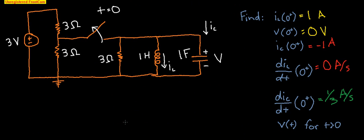And that's all of our initial conditions. The reason you need initial conditions is that when you go to solve the circuit for V(t), you'll find that you can't figure out what certain constants are. You need these initial conditions to plug numbers back in so that you can solve for those constants, and we'll see that as we continue solving.